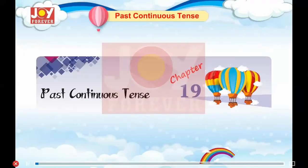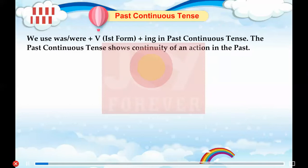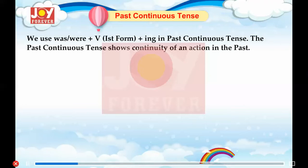Chapter 19: Past Continuous Tense. We use 'was' or 'were' plus the first form of the verb plus '-ing' in the past continuous tense. The past continuous tense shows the continuity of an action in the past.